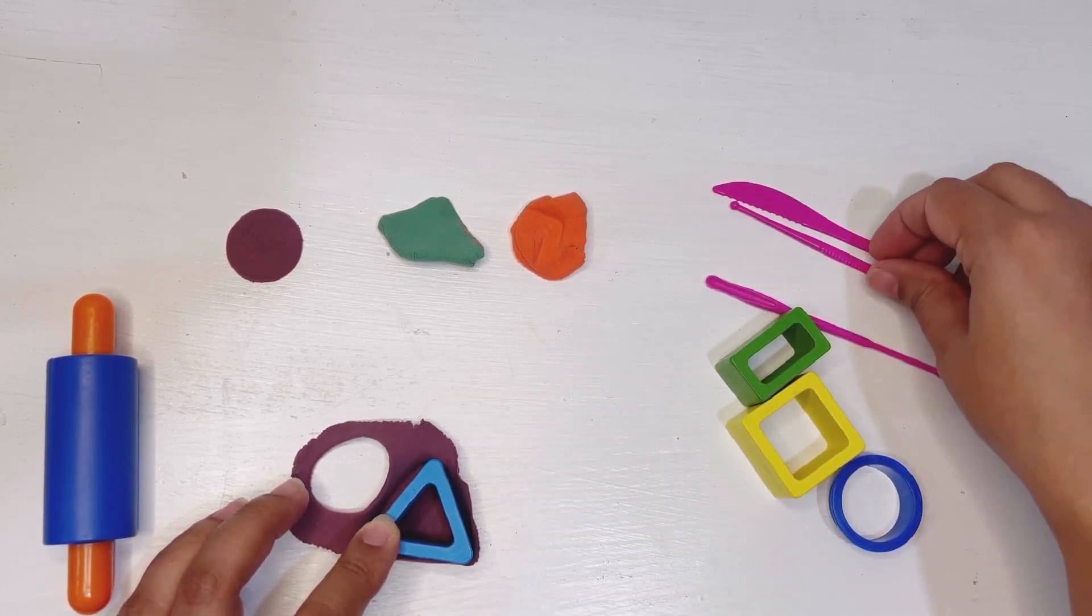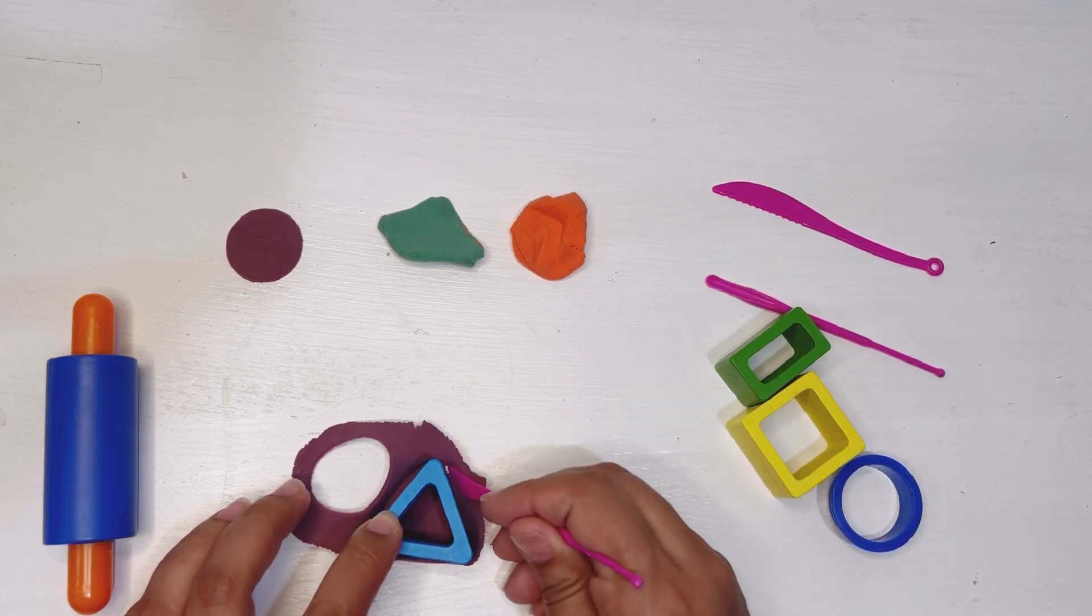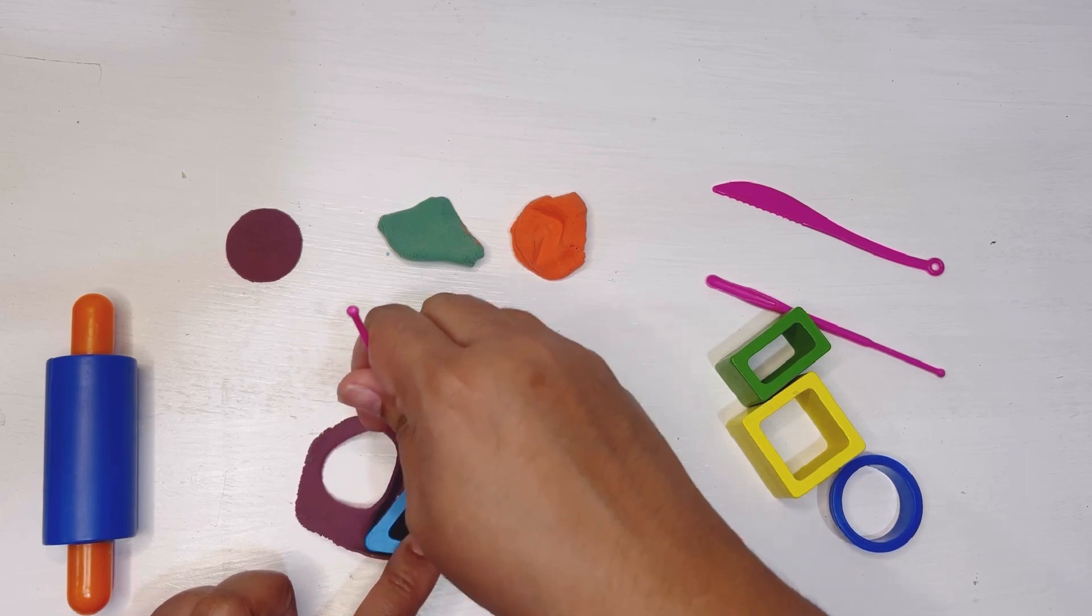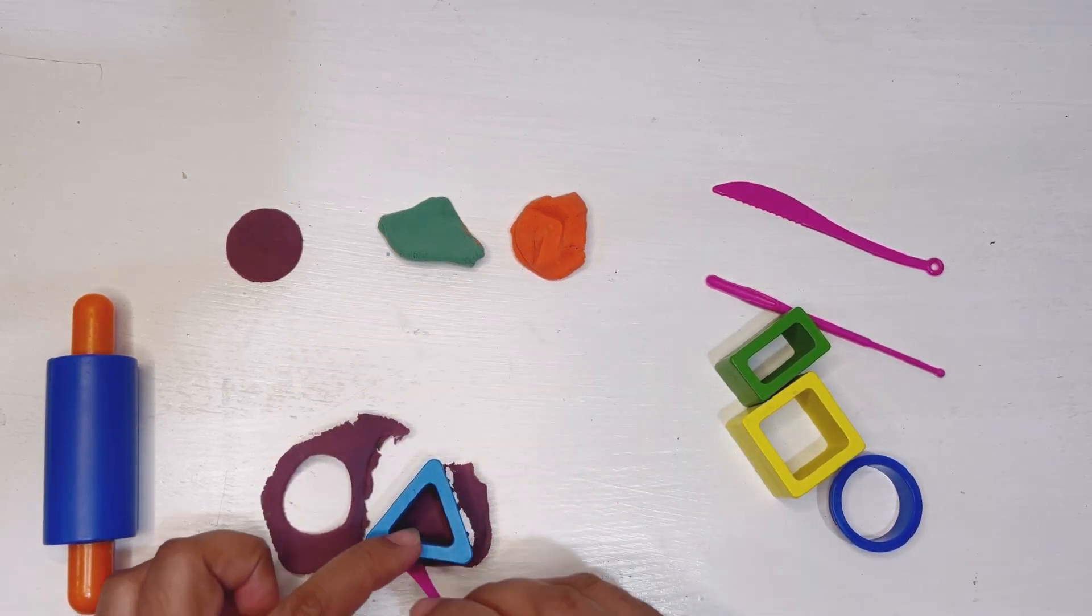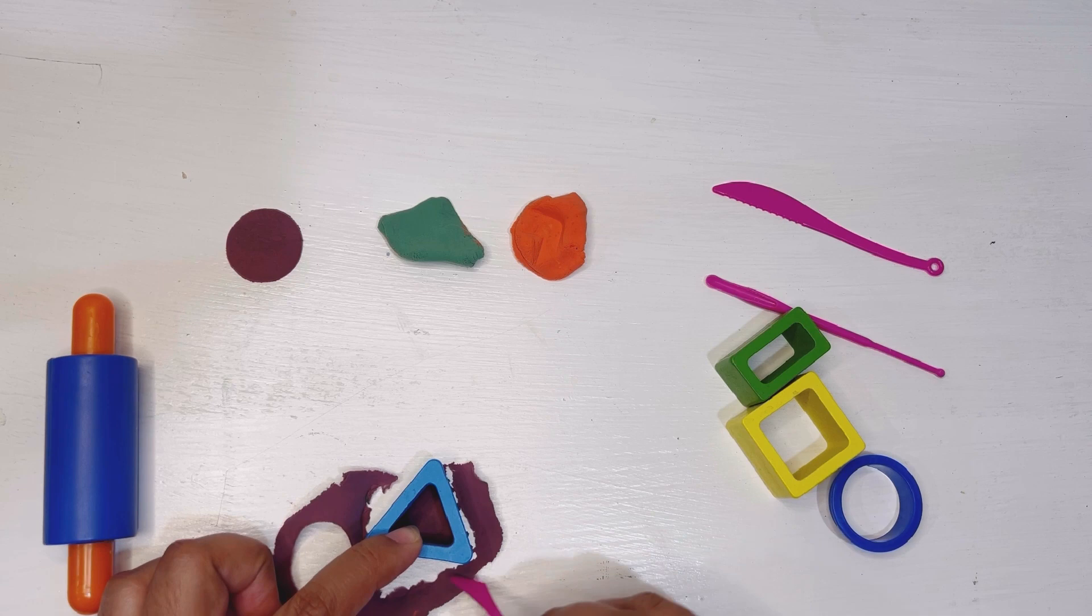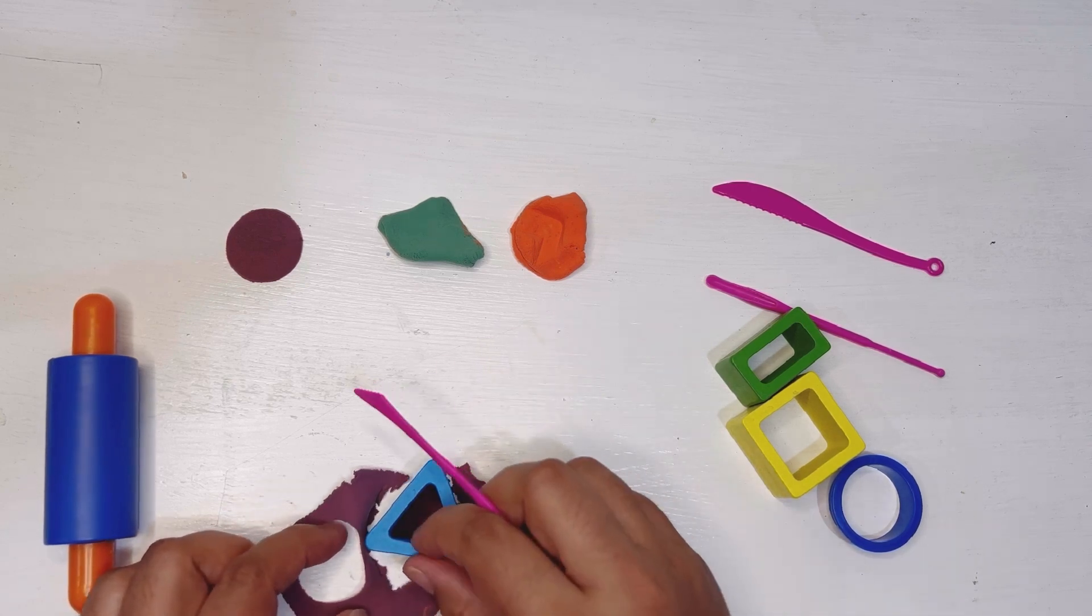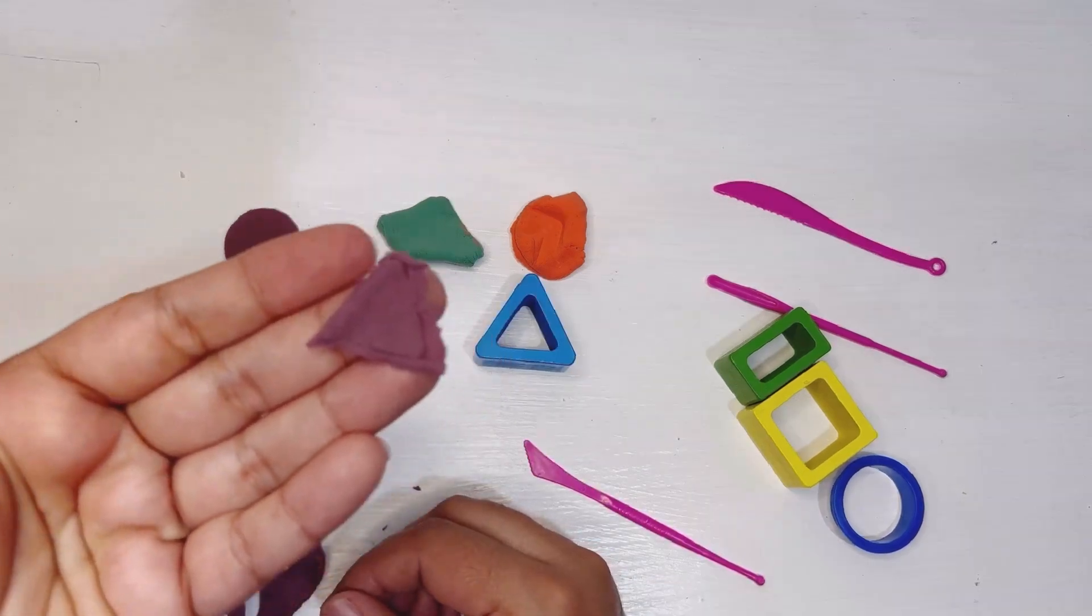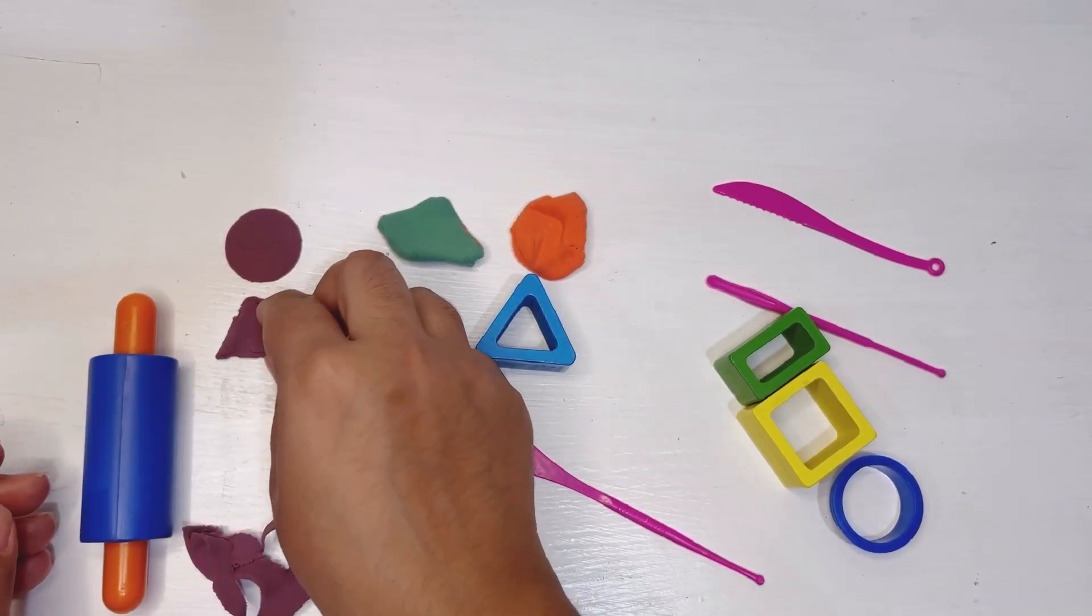We'll use something to cut the sides. Almost done. We'll put the leftover play-doh on the side and here we have our final look of triangle.